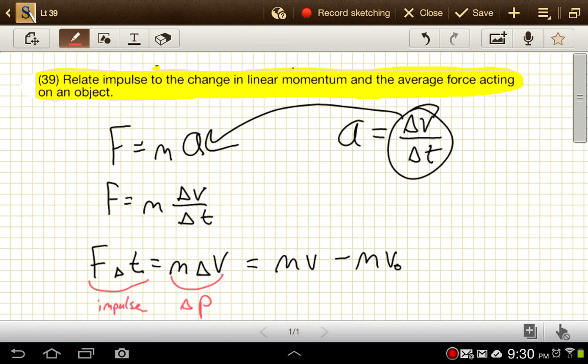So this expression then is known as the impulse-momentum theorem. Impulse is sometimes written out as a capital J. So the impulse is equal to the change in momentum for some object.